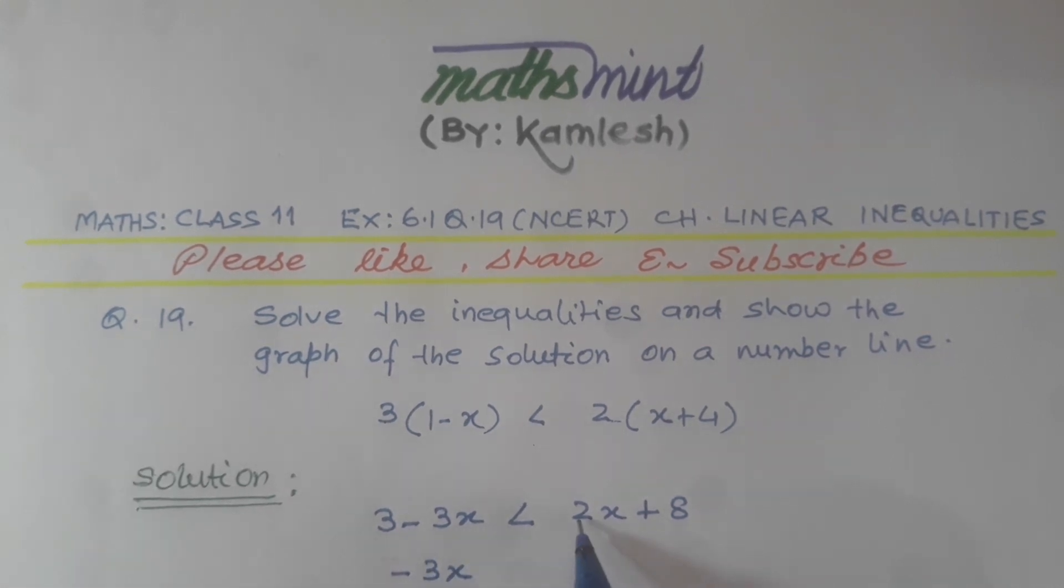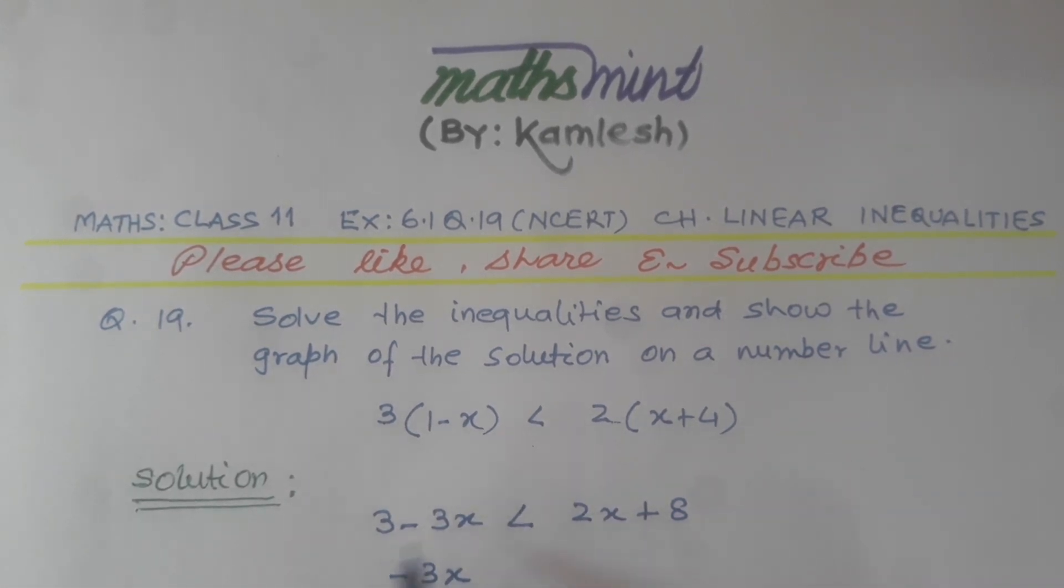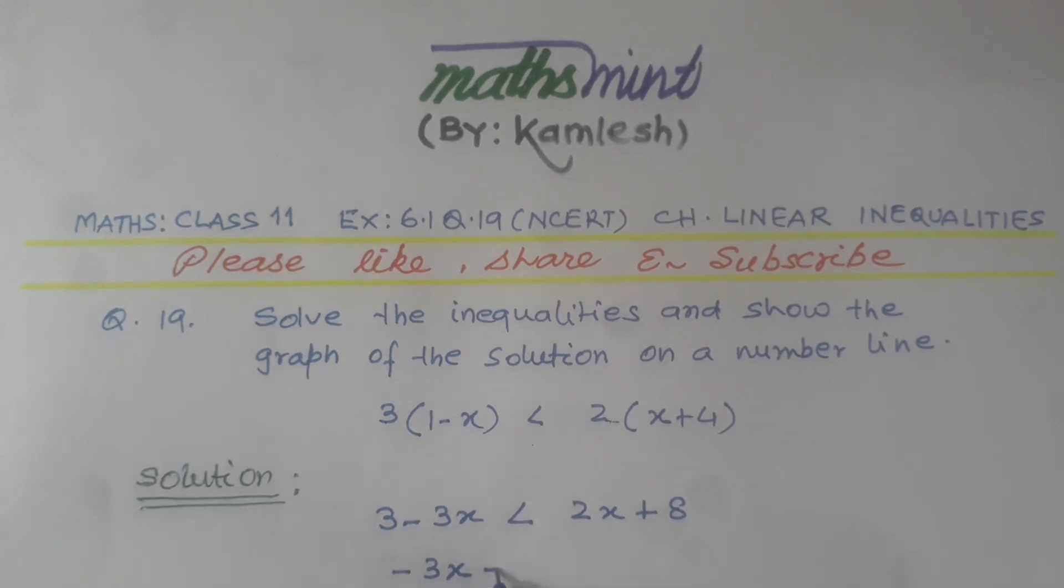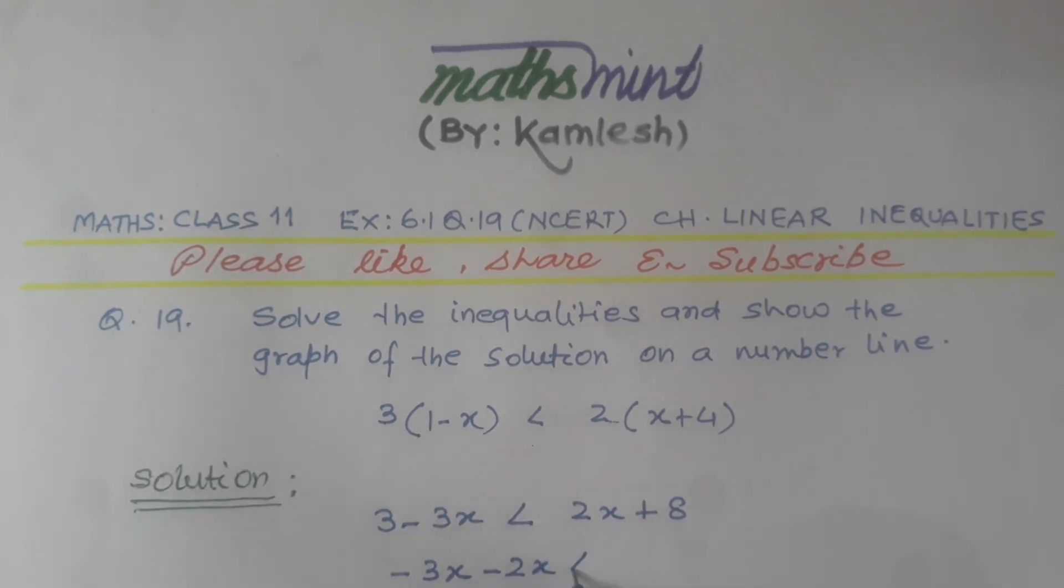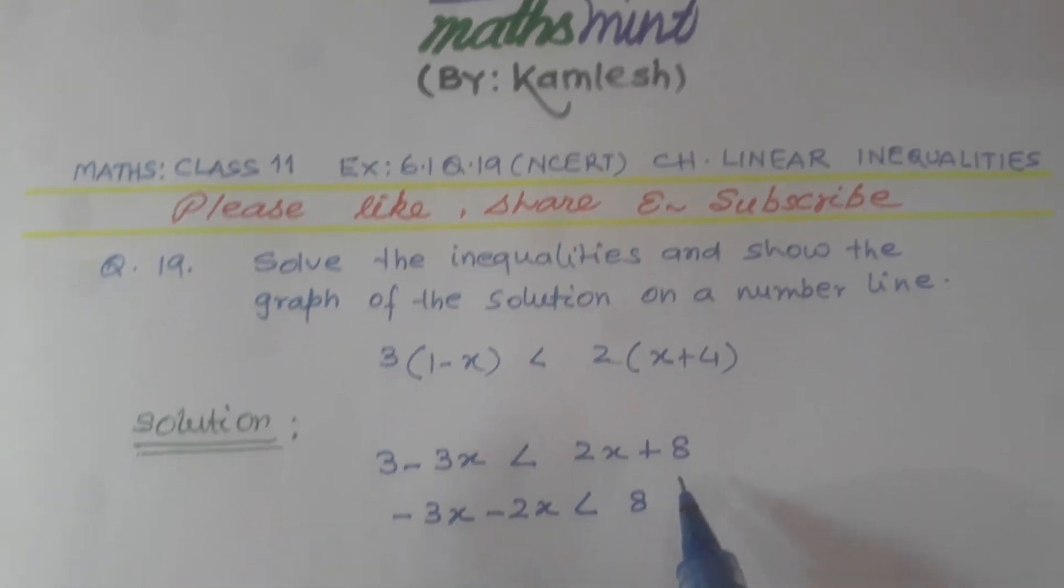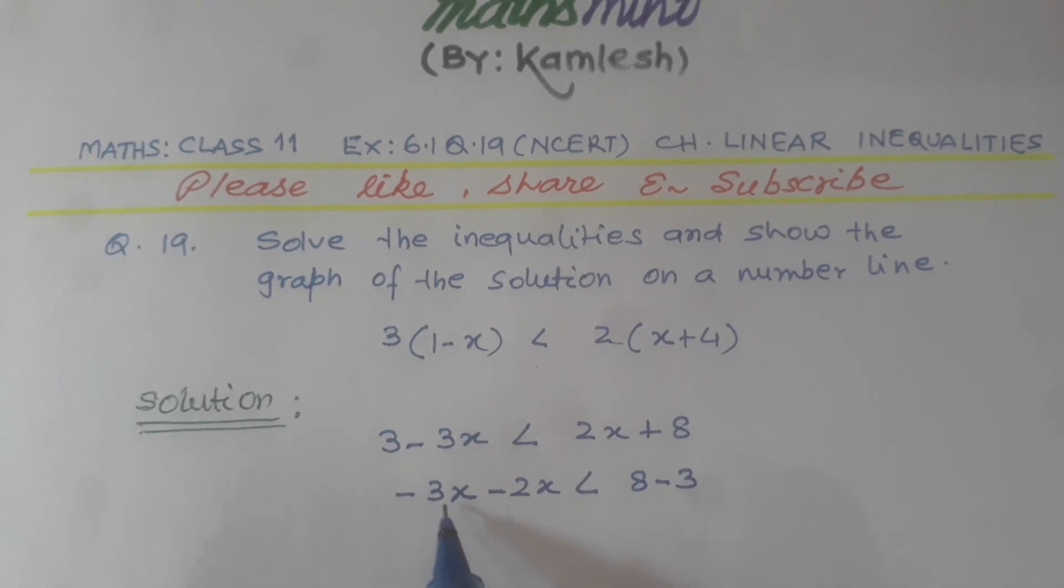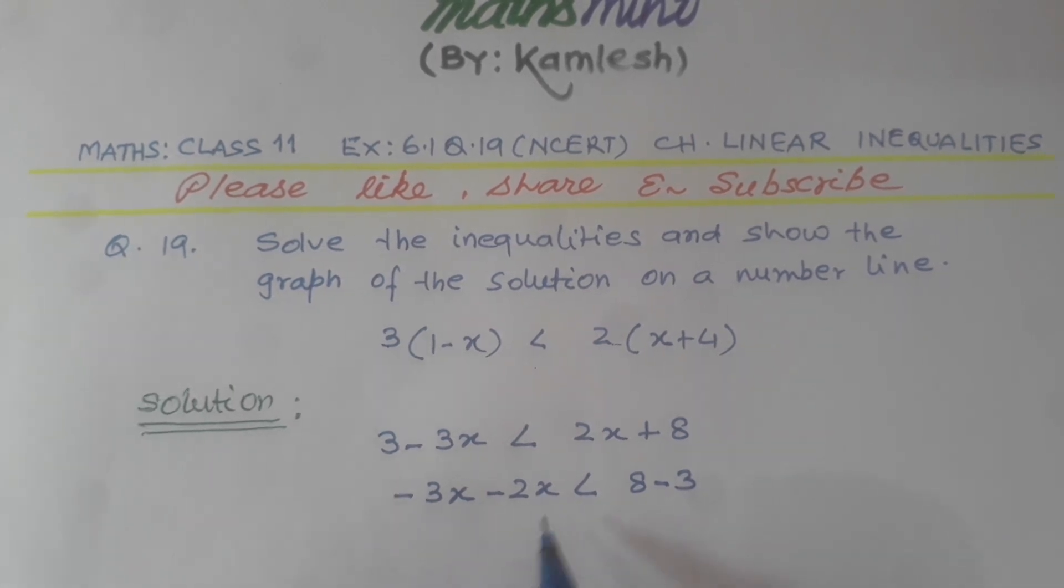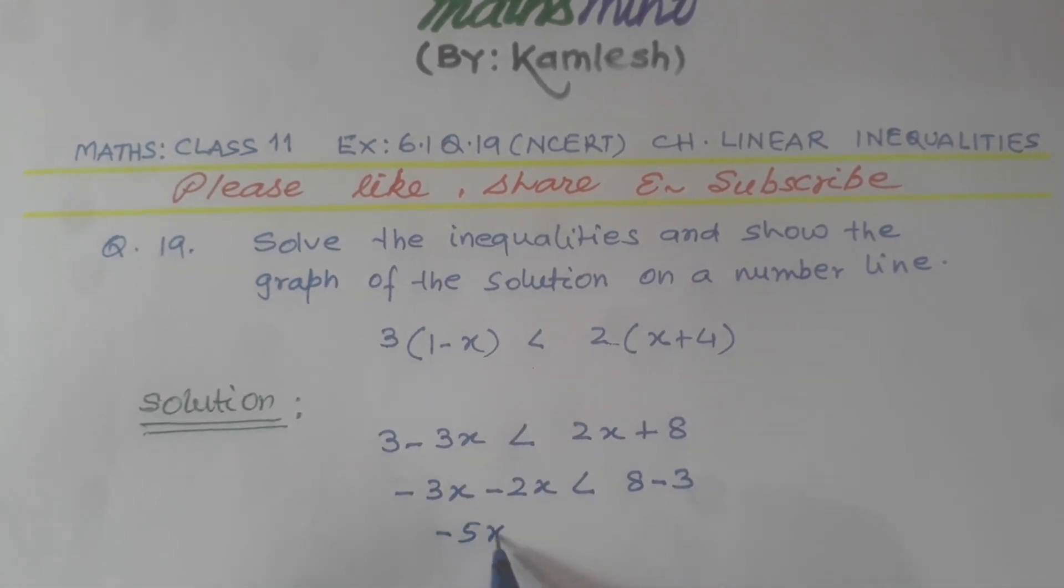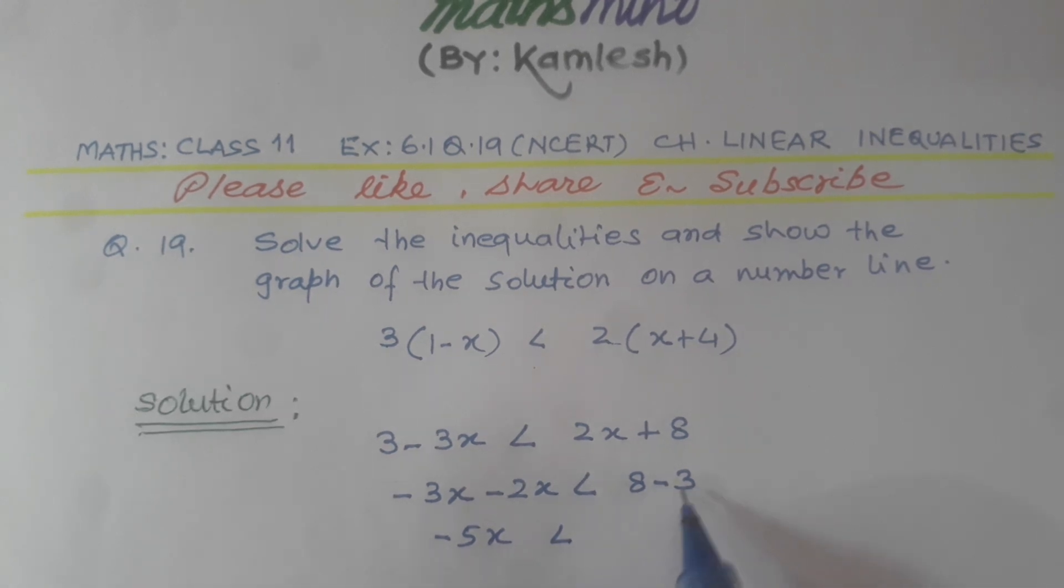We keep 8 on this side and transpose 3 to this side, so it becomes minus 3. Now minus 3x minus 2x equals minus 5x, which is smaller than 8 minus 3, which equals 5. So minus x is smaller than 5 divided by 5, which equals 1. Hence minus x is smaller than 1.